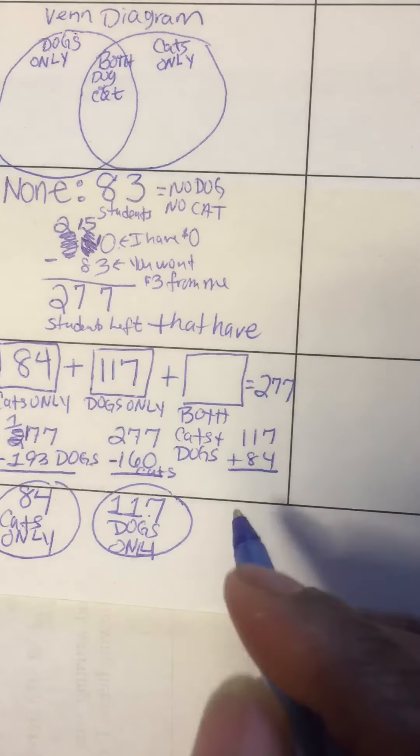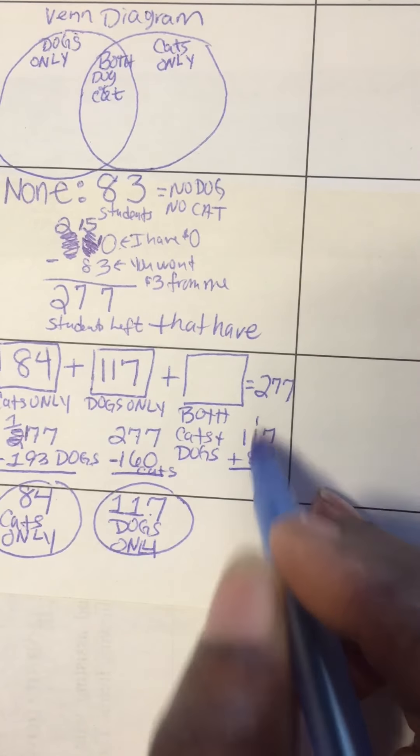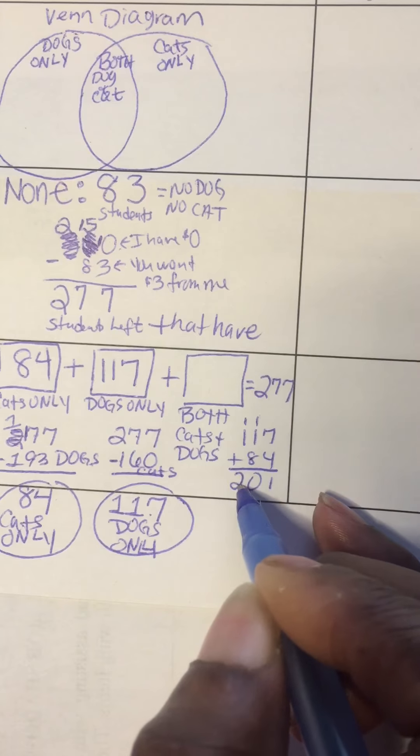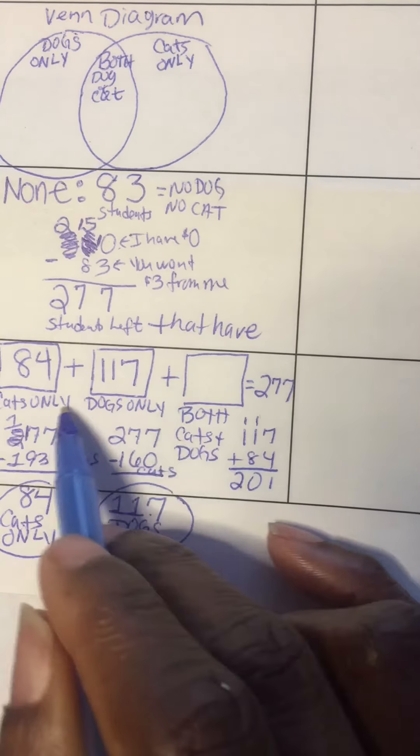7, 8, 9, 10, 11. Carry the 1, 8, 9, 10, 0, carry the 1. That's 201 with cats and dogs only.